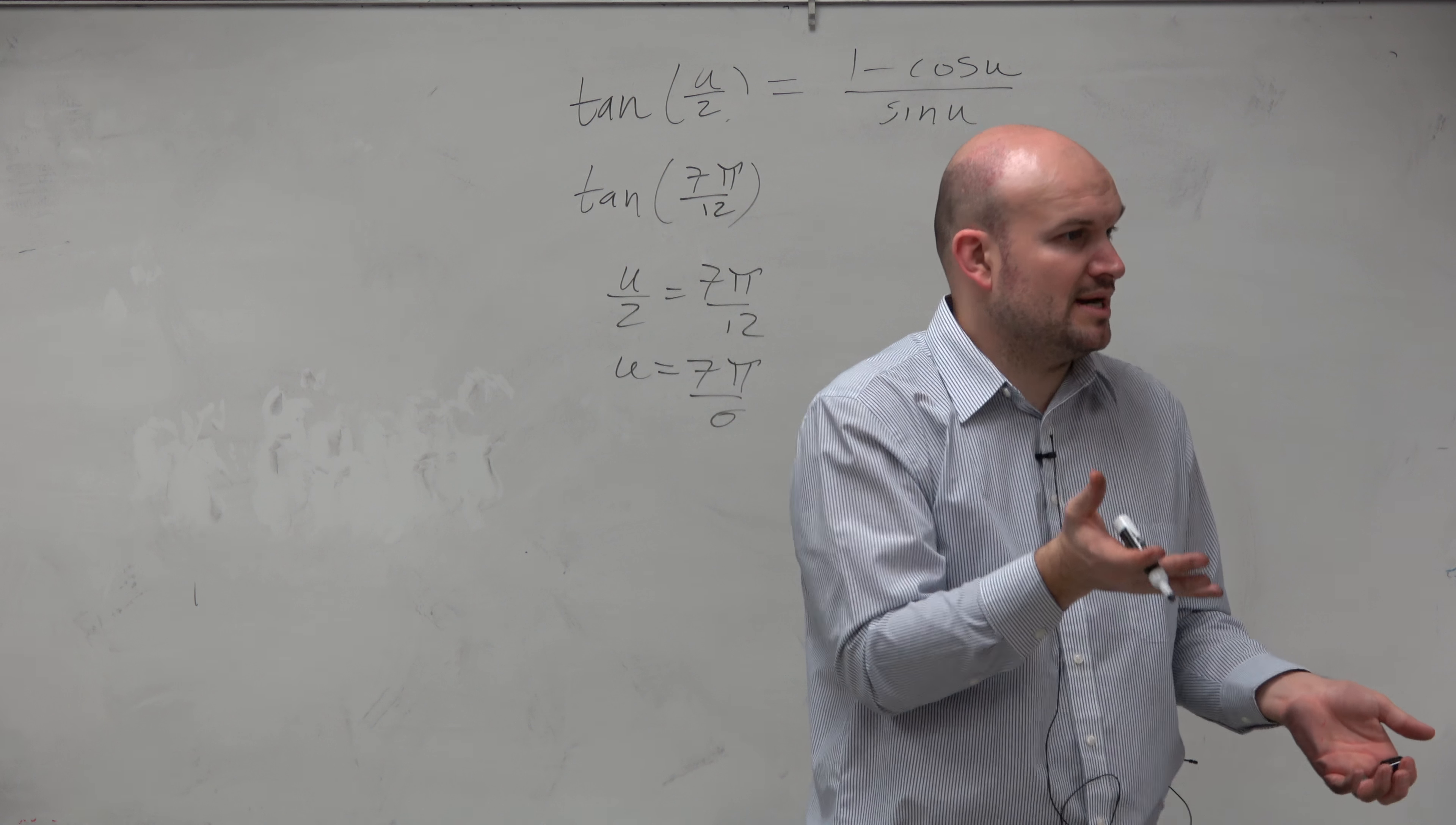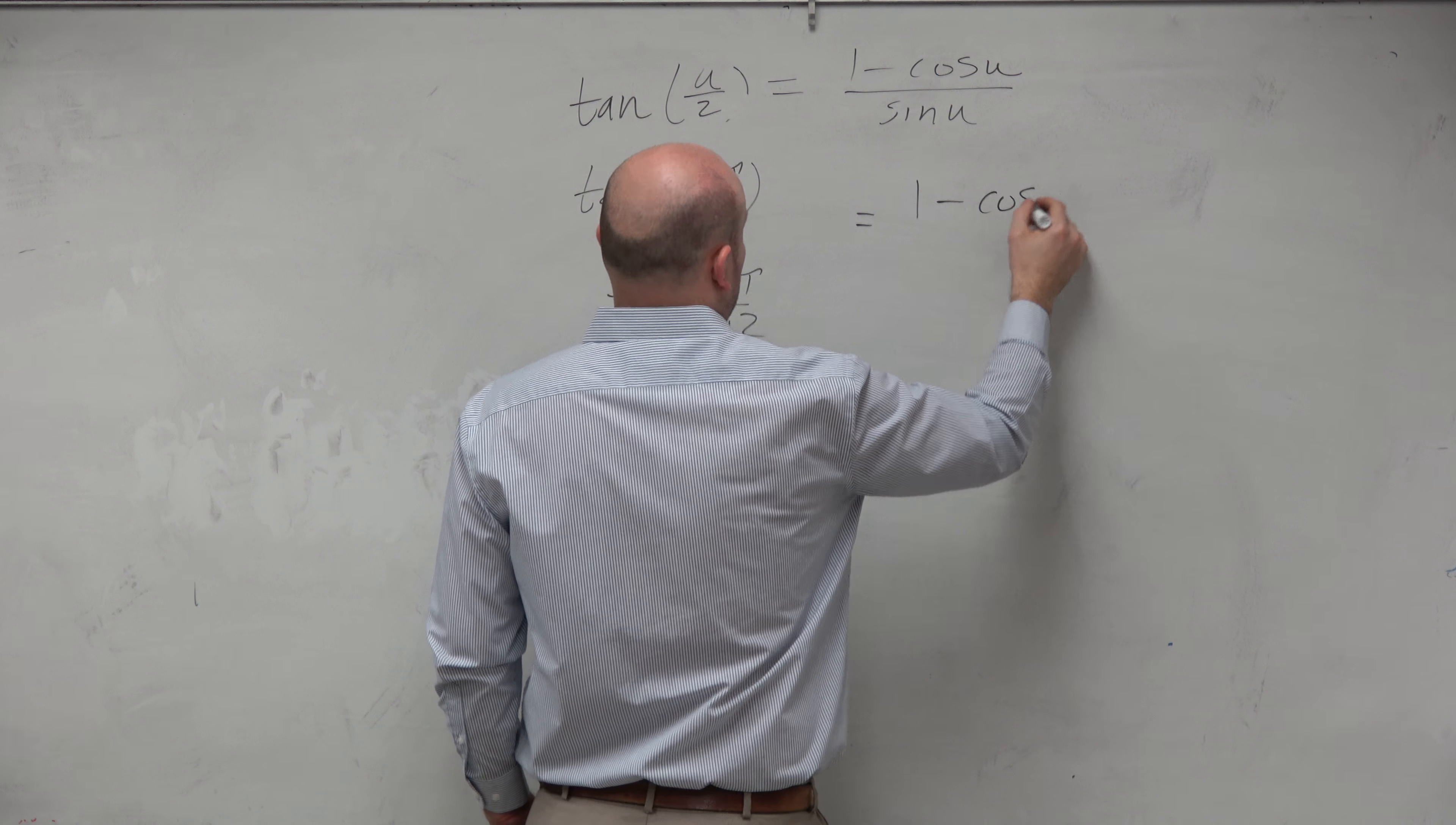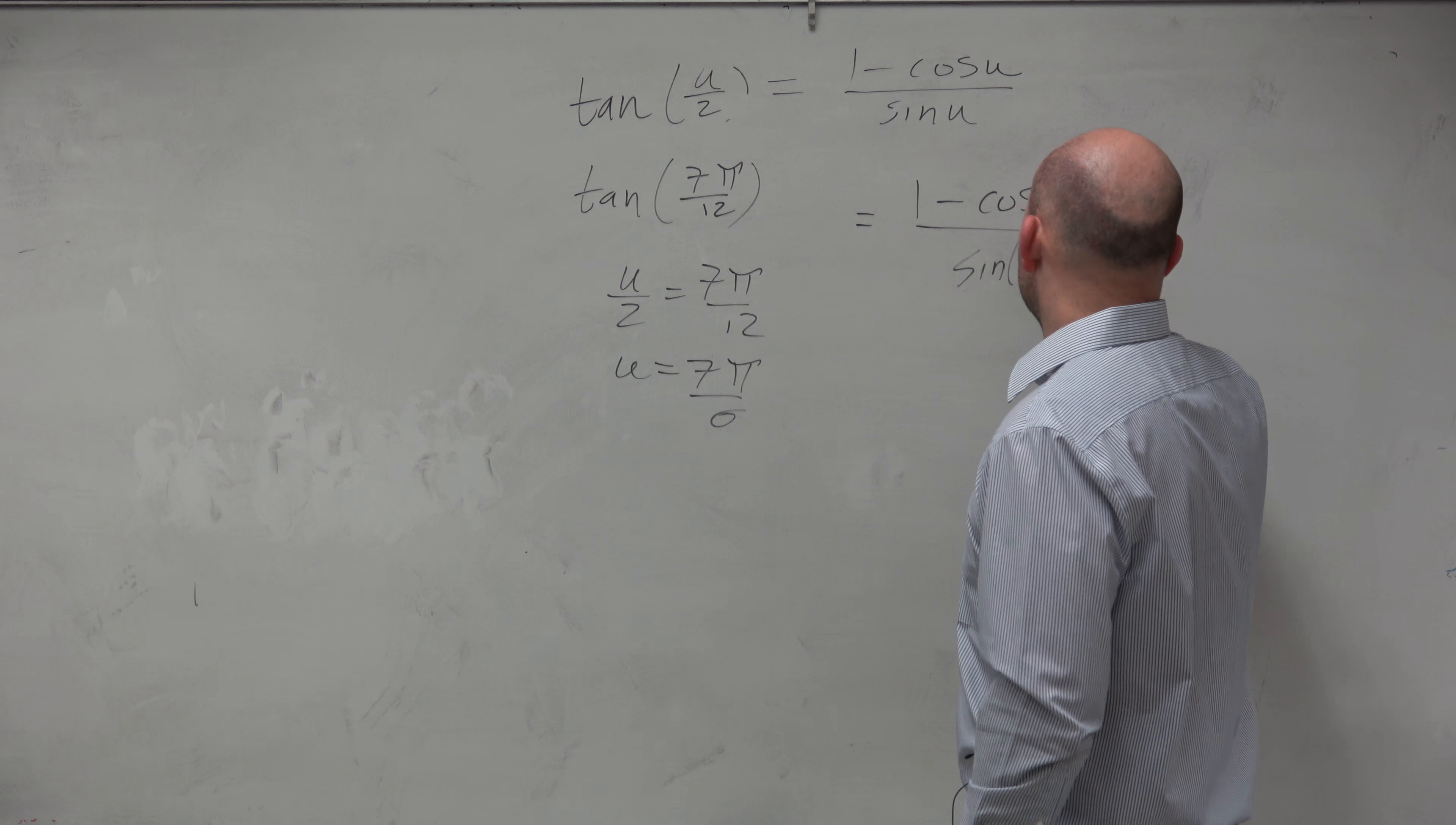Fortunately for tangent, we don't need to worry about the plus or minus. All we got to do is figure out what u is and then plug it in. So in this case, we're left with (1 - cos(7π/6)) / sin(7π/6).